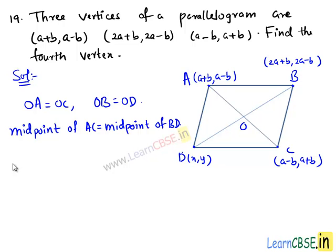Now we have midpoint of diagonal BD equals ((x + 2a+b)/2, (y + 2a-b)/2).